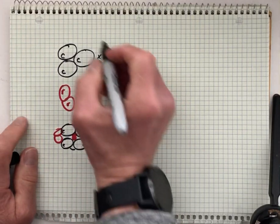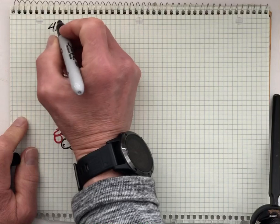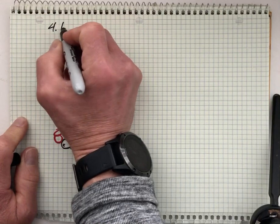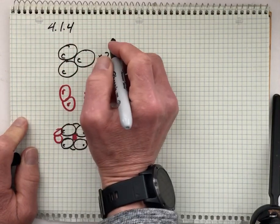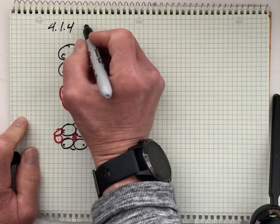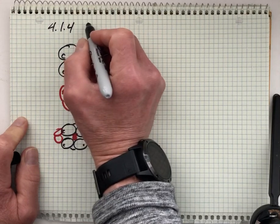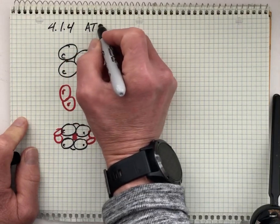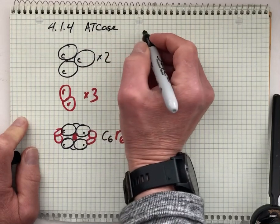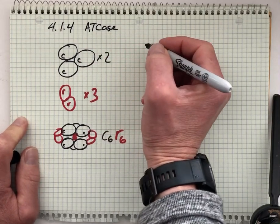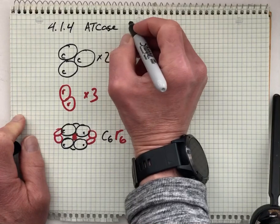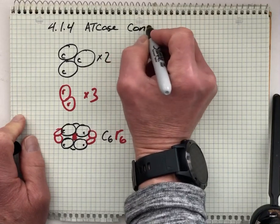In this video we're going to continue our discussion about ATCase, our first topic for exam 4, looking specifically at the binding sites for these allosteric effectors and putting that into relationship of the concept map.